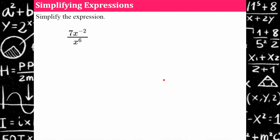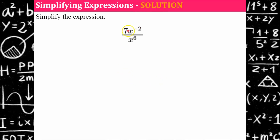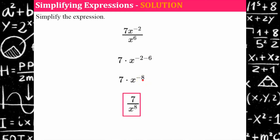Your turn — pause and try it. Welcome back. This is a product: seven multiplied by x to the negative two. Using the quotient of a power property, subtract the exponents: negative two subtract six gives x to the negative eight. That's the reciprocal one over x to the positive eight, so the answer is seven over x to the eighth.